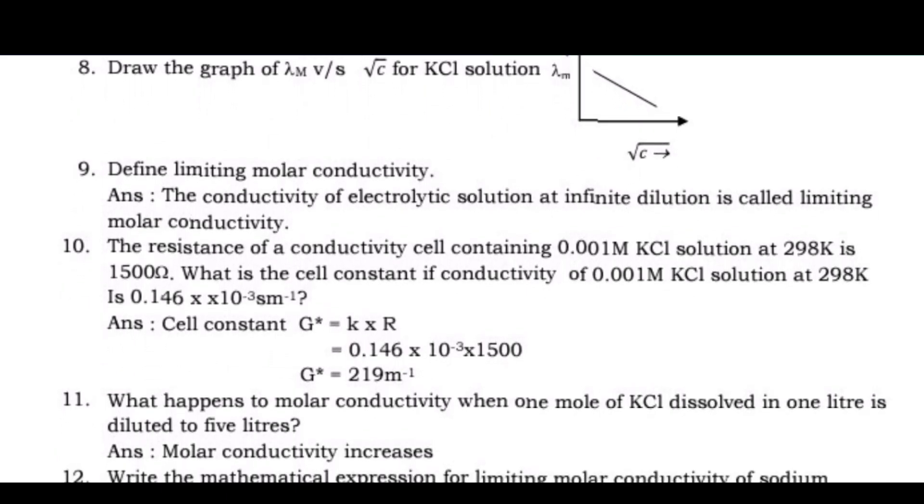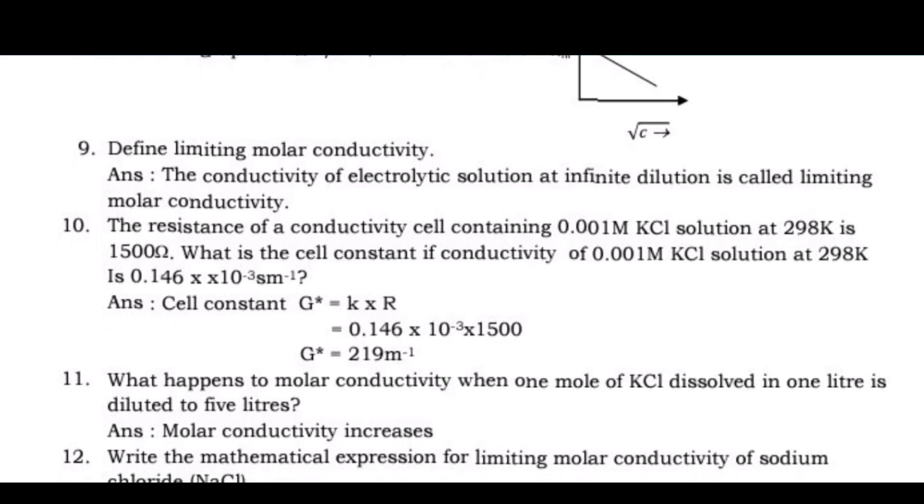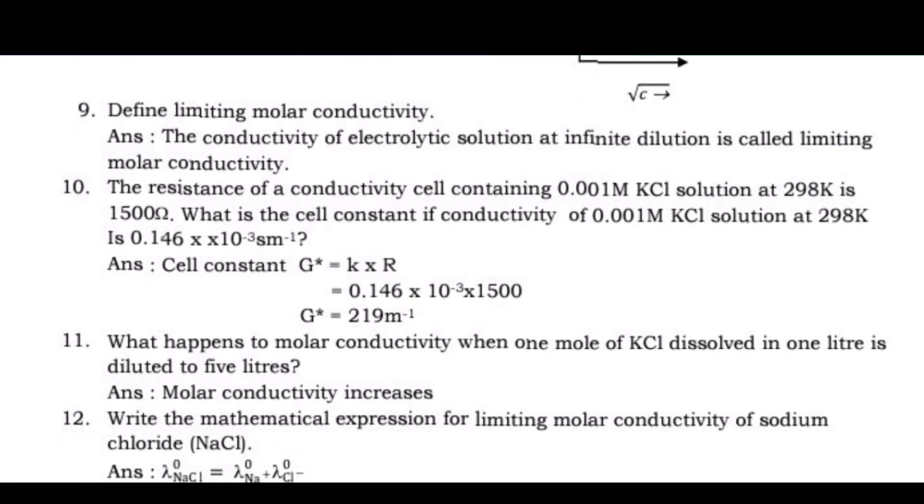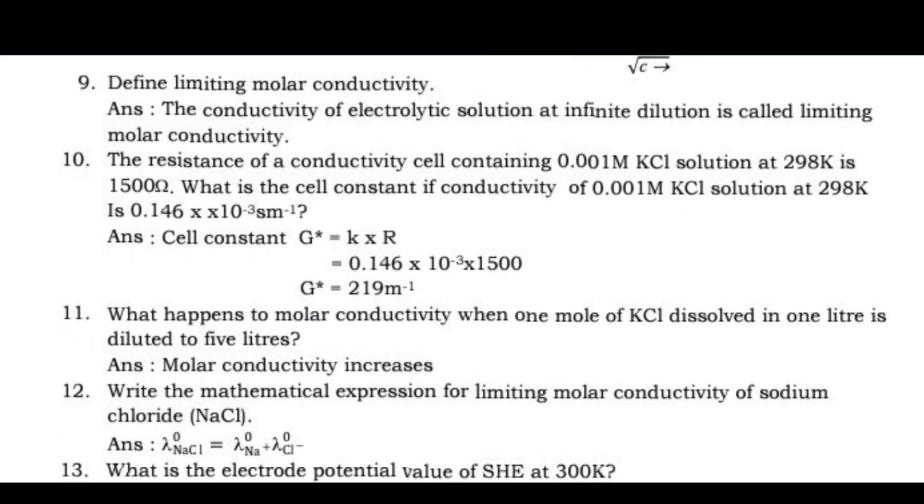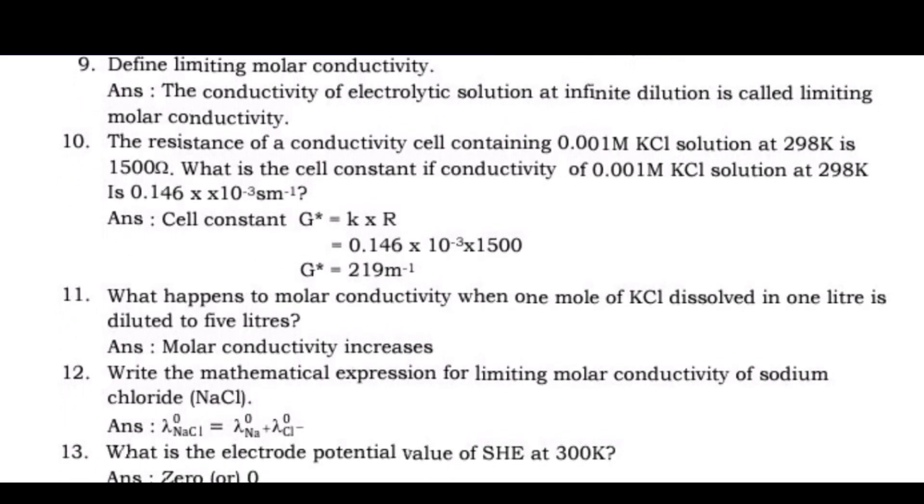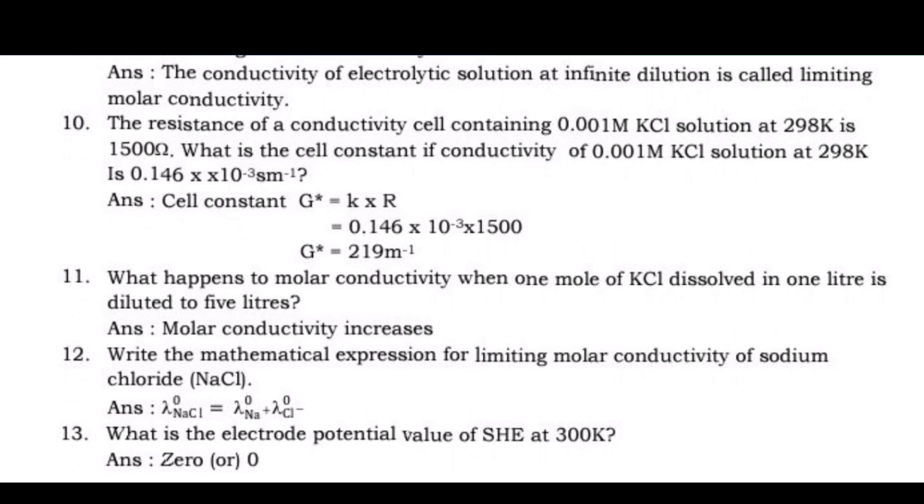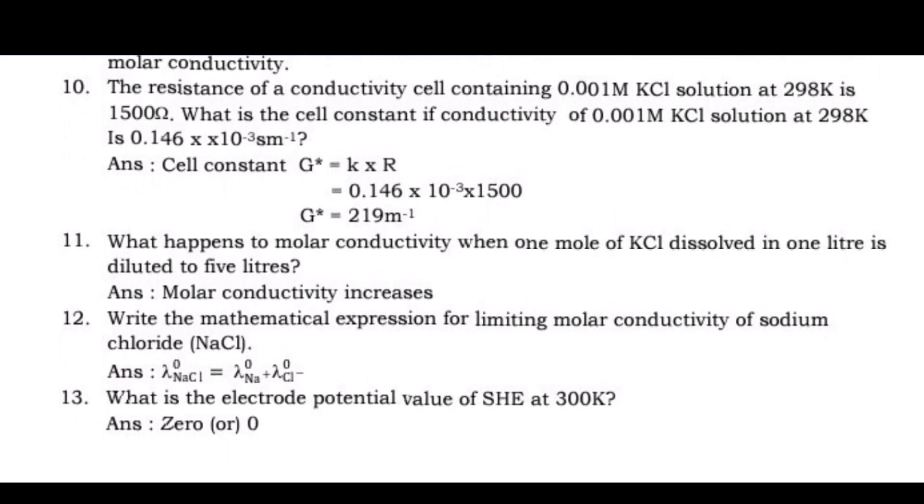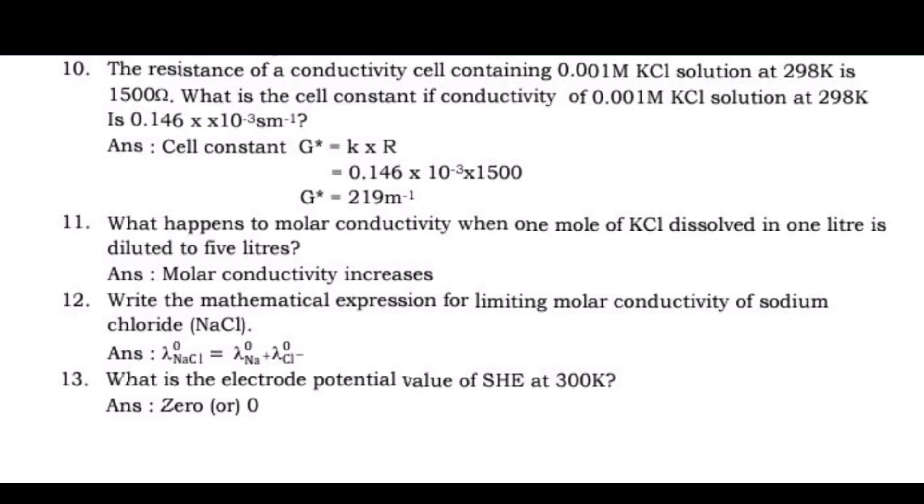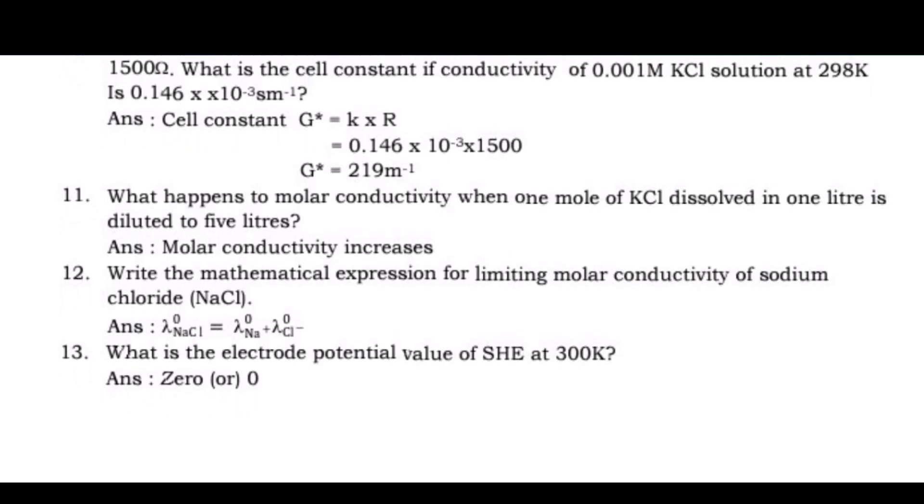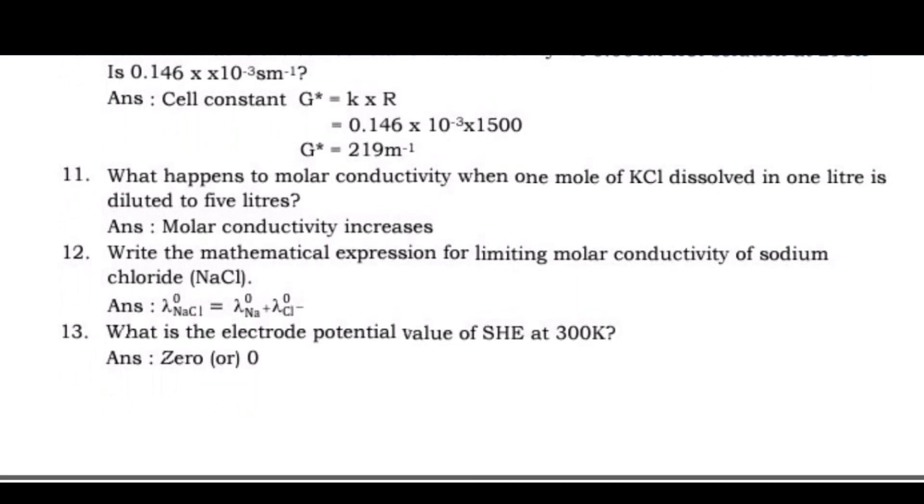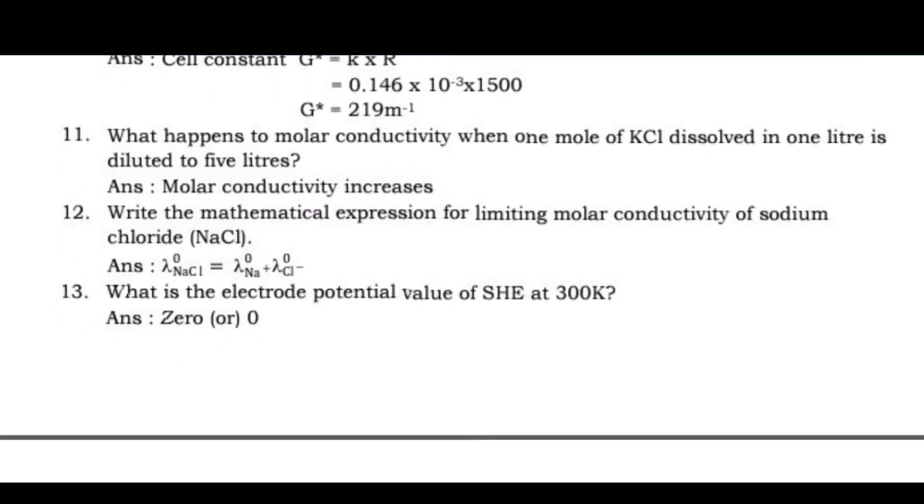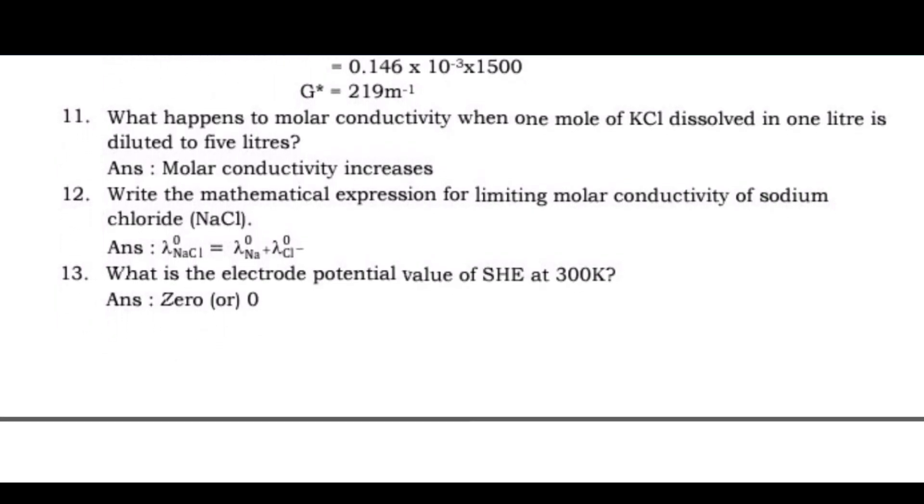Question 10: The resistance of a conductivity cell containing 0.001M KCl solution at 298K is 1500Ω. What is the cell constant if conductivity of 0.001M KCl solution at 298K is 0.146 × 10⁻³ Sm⁻¹? Question 11: What happens to molar conductivity when 1 mole of KCl dissolved in 1 liter is diluted to 5 liters? Answer: Molar conductivity increases.